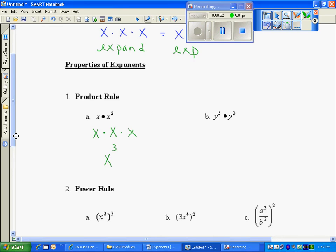In the next problem, I have y to the fifth. I'm going to expand. That means five y's are being multiplied by each other times an additional three y's. From my expanded form into my exponential, my base is y, multiplied by itself a total of eight times.